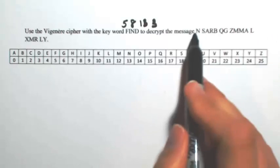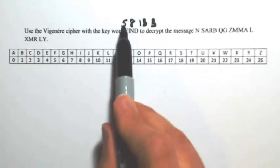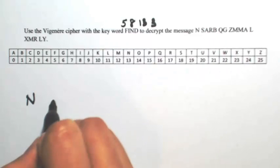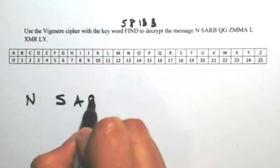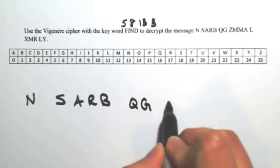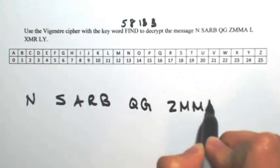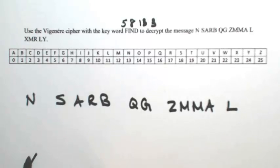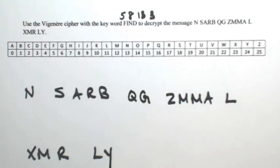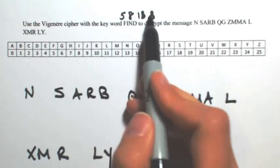So now I'm going to rewrite my encrypted message and then write down what the shift is going to be for each letter. So just rewriting my message. Above each letter, I'm going to write down the shifting, so 5, 8, 13, and 3.